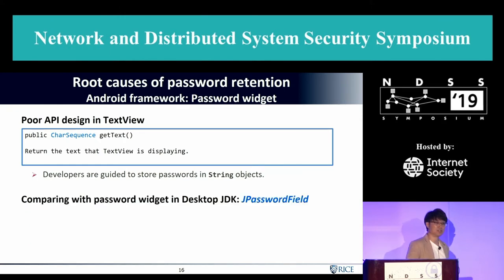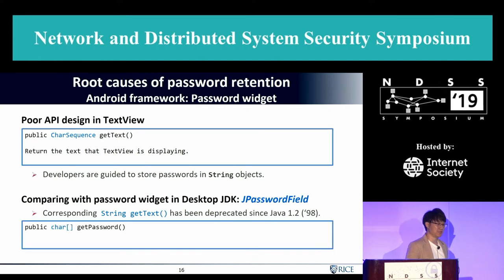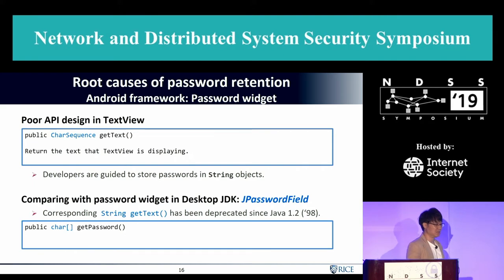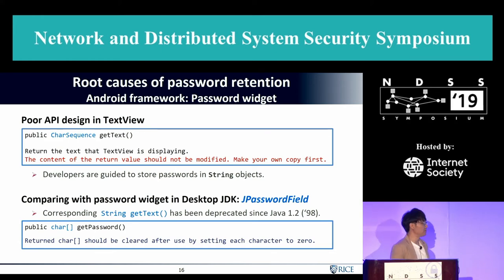This Android API goes in totally the opposite direction from basic security rules. We compared it with the password widget in desktop Java's Swing API. Swing had a dedicated API — a getPassword() method returning a char array — provided 20 years ago, and they recommended that the returned char array should be cleared after use. But now, 20 years later, Android says 'the content of the password should not be modified.' Android is clearly missing something in terms of user input password security.